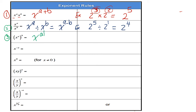Third rule: if I have a power inside brackets and another power outside, I multiply the powers — not add them. For example, 3 to the power of 2, all to the power of 5: I multiply 2 by 5, which gives me 3 to the power of 10.